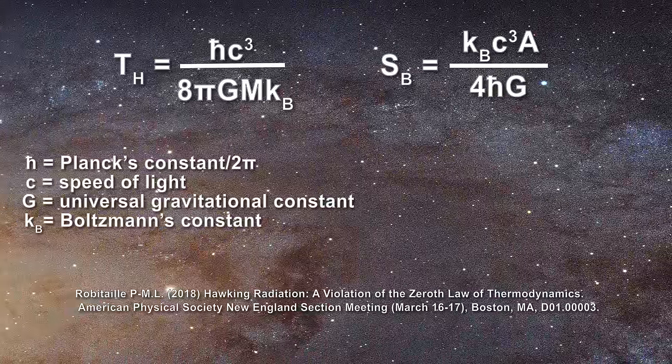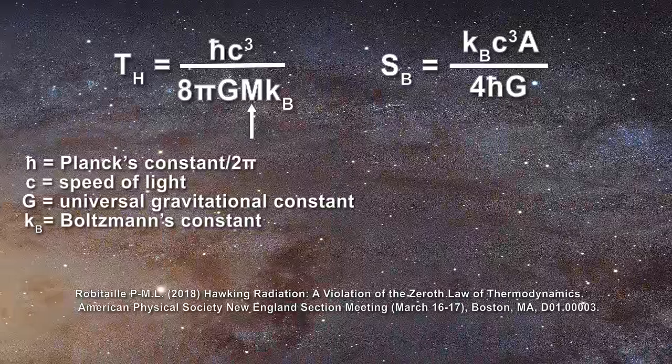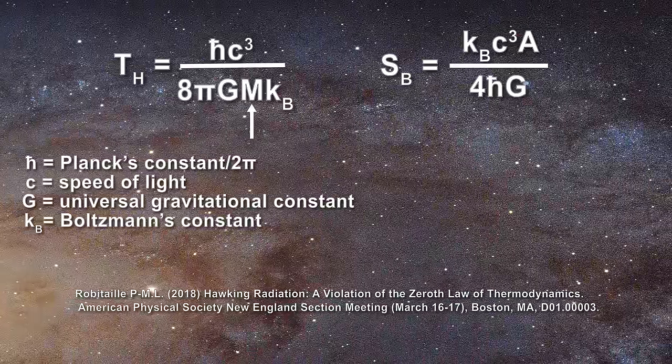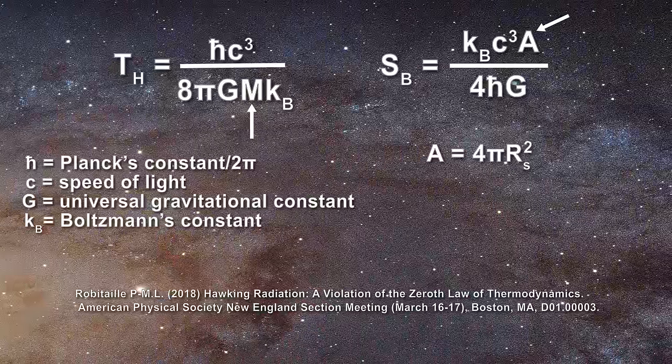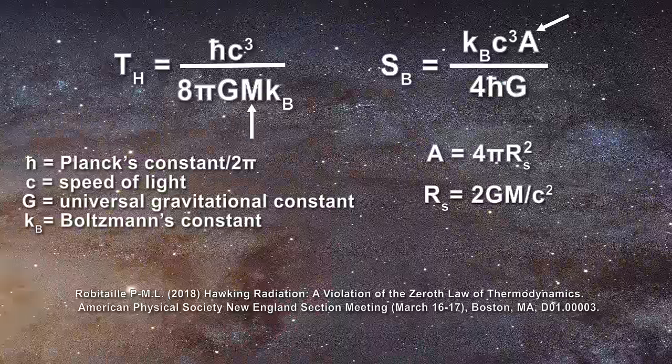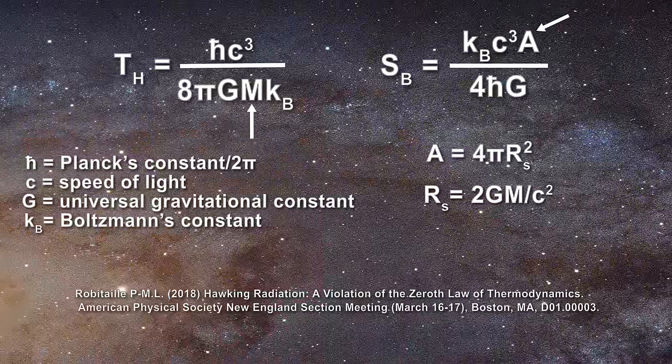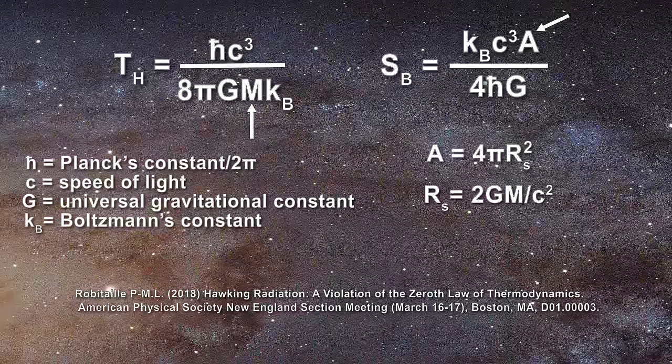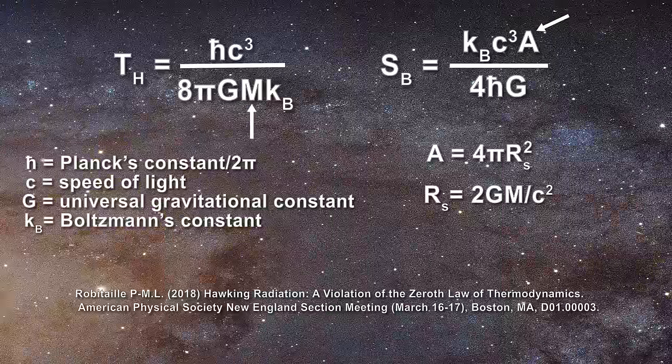The temperature of a black hole is inversely related to its mass and thereby can never be intensive. Conversely, its entropy is related to the area of the event horizon. But that area is equal to 4πR² where R is the Schwarzschild radius equal to 2GM/c². As a result, the entropy of a black hole is related to the square of its mass and that can never be extensive, as extensive properties must be additive. Both of these expressions are non-physical.